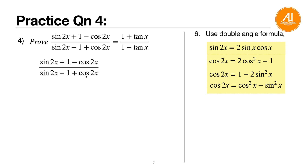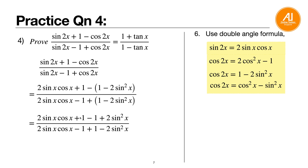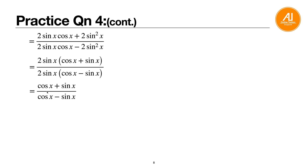After substitution and cancellation of plus one and minus one terms in both numerator and denominator, you get (2 sine x cosine x plus 2 sine squared x) over (2 sine x cosine x minus 2 sine squared x). Take out the common factor 2 sine x from all four terms, then cancel 2 sine x from numerator and denominator, leaving (cosine x plus sine x) over (cosine x minus sine x).